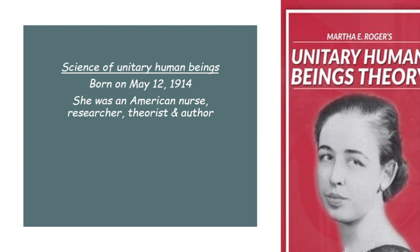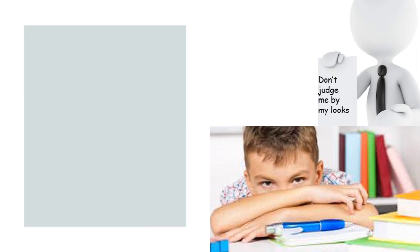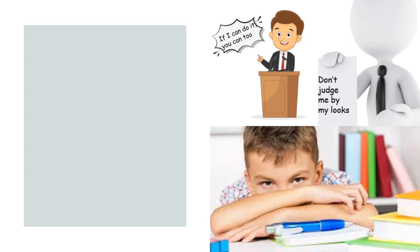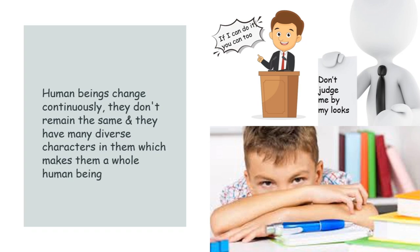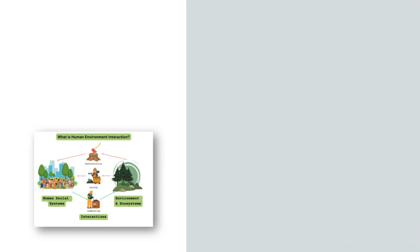Why did she call human beings 'unitary'? Because unitary means a characteristic related to a unit or units which altogether form a single or uniform entity. The same thing happens in human beings — we cannot define someone by just one materialistic character or how they look outside. For example, a student may be very shy today but may grow into a wonderful influencer tomorrow, motivating hundreds of people. Human beings change continuously and have many diverse characters, making them a whole.